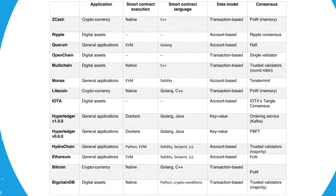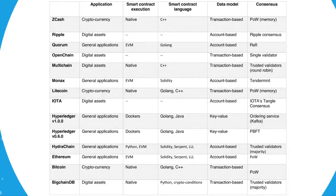Let's zoom in on the comparison chart. The first row shows the names of different blockchain platforms, followed by their applications. For example, Zcash and Litecoin are used for cryptocurrency applications. Bitcoin is also used for cryptocurrency. In Bitcoin, smart contract execution is native — no custom smart contract needs to be written. The language used is either Golang or C++. The model is transaction-based, and the consensus mechanism algorithm used is Proof of Work.